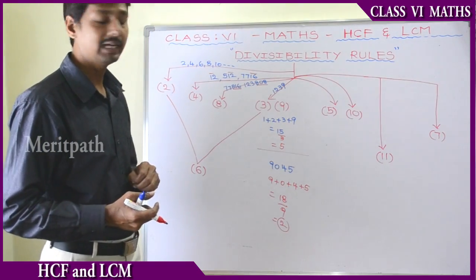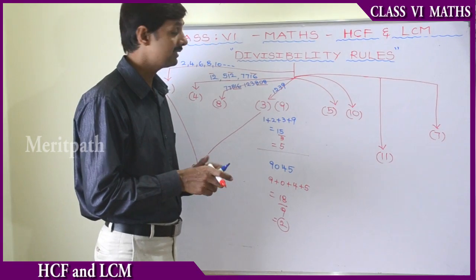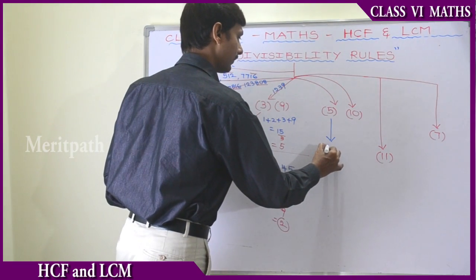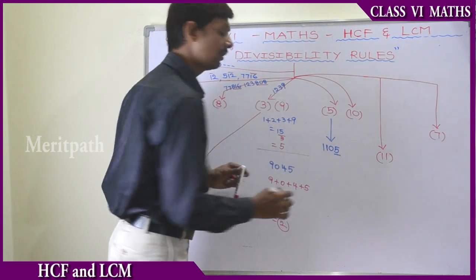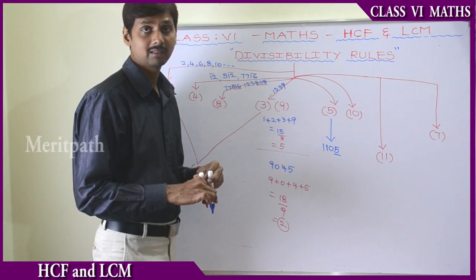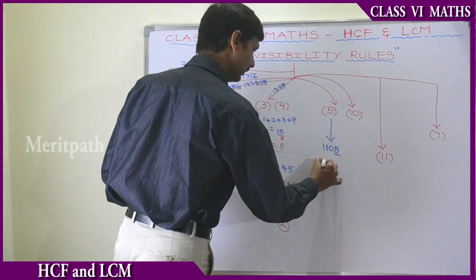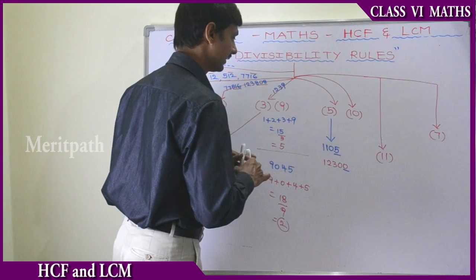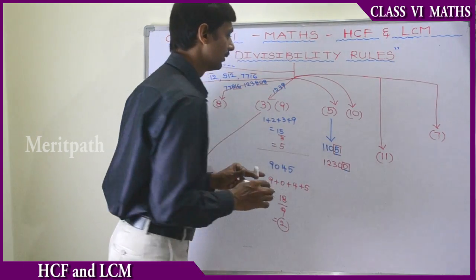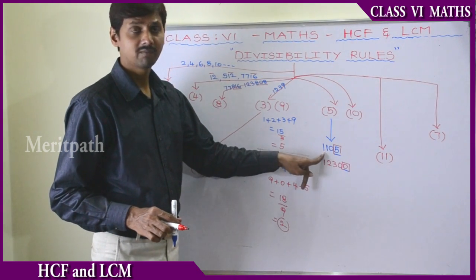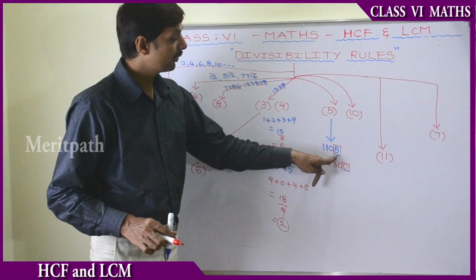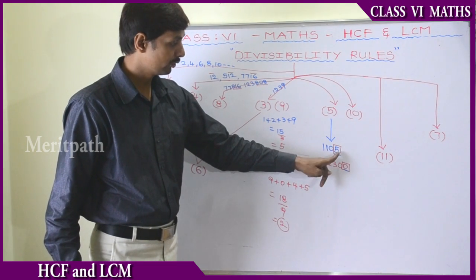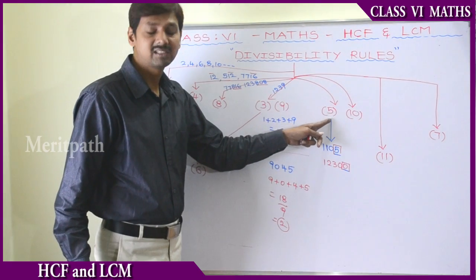So the same property applies for 3 and 9. For 3: sum of all digits of a number is divisible by 3, then the whole number is divisible by 3. For 9: sum of all digits is divisible by 9, then the whole number is divisible by 9. Now let us go to the divisibility property for 5 and 10. For 5: if the units place of a number is 5 or 0, then the number is divisible by 5. For example, 1105 has units digit 5, and 12300 has units digit 0 — both are divisible by 5.